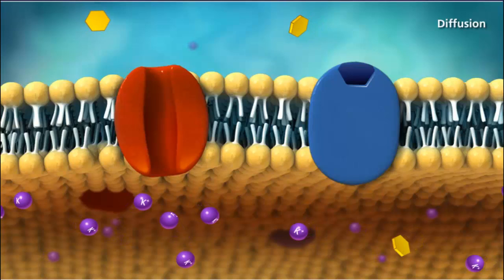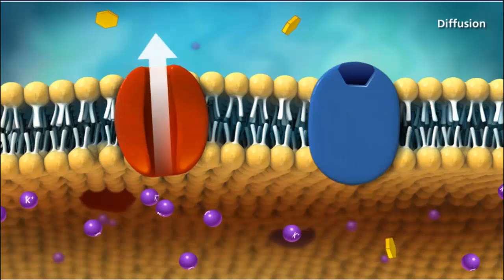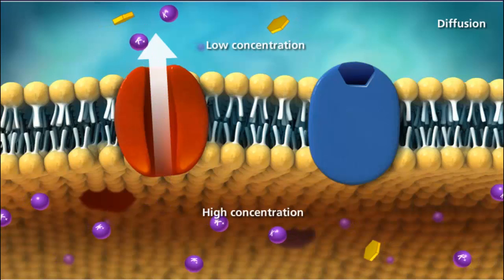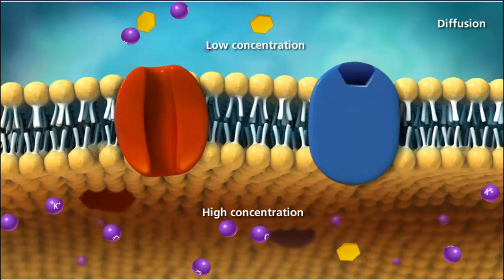Diffusion is a process in which substances move across a membrane from an area of high concentration to an area of lower concentration, or between areas of opposite electrical charges. This is called the electrochemical gradient.